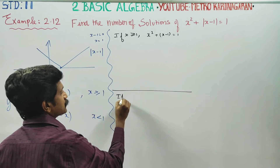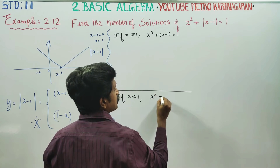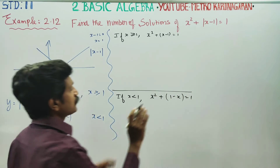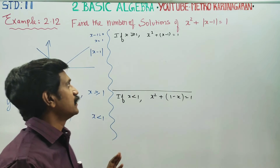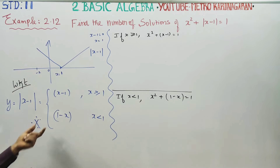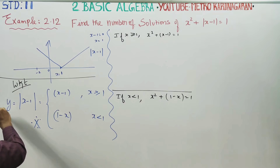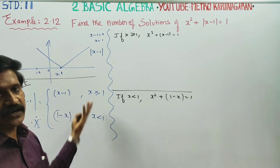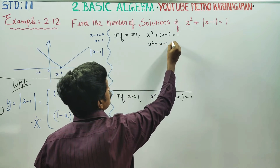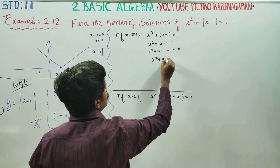Case 1: if x is greater than or equal to 1. Case 2: if x is less than 1. For Case 1, the equation is x² plus (x-1) equal to 1, which gives x² plus x minus 1 minus 1 equal to 0, so x² plus x minus 2 equal to 0.